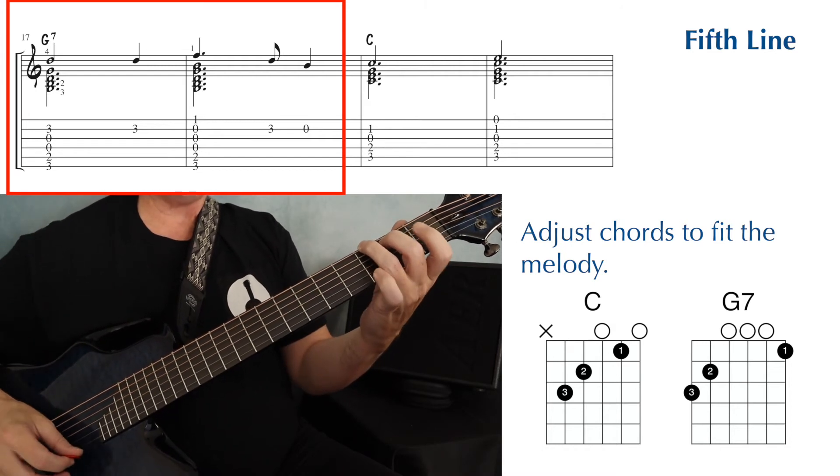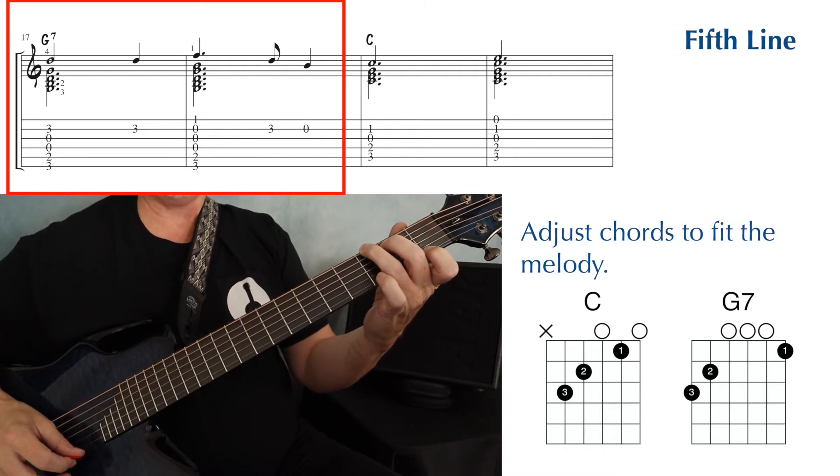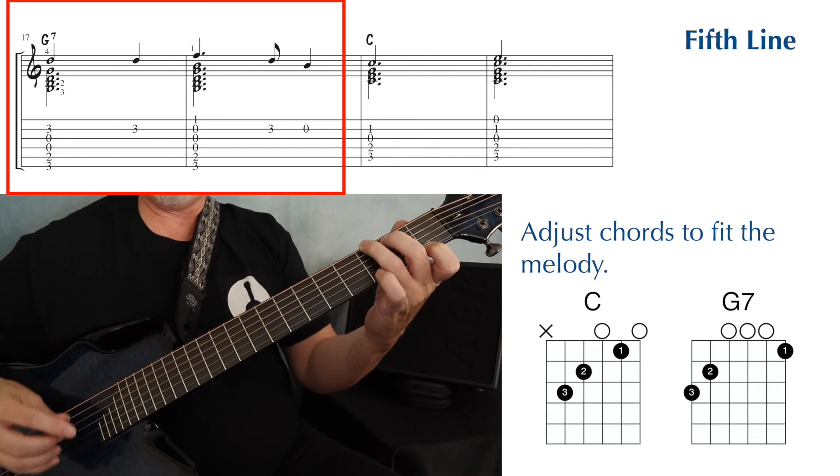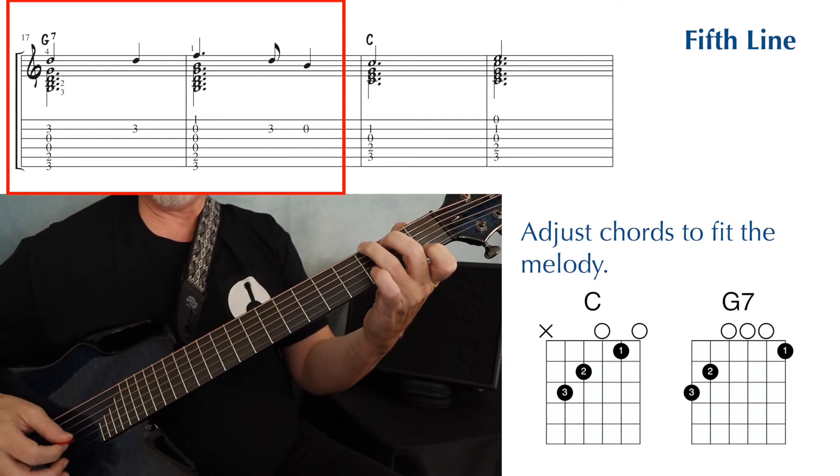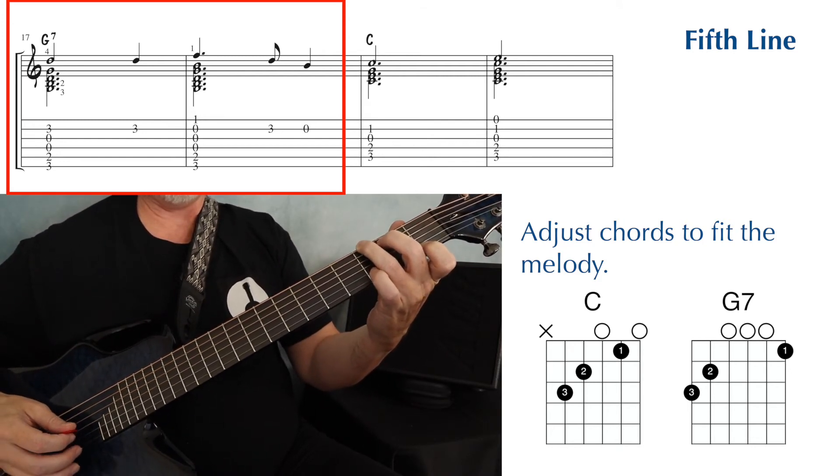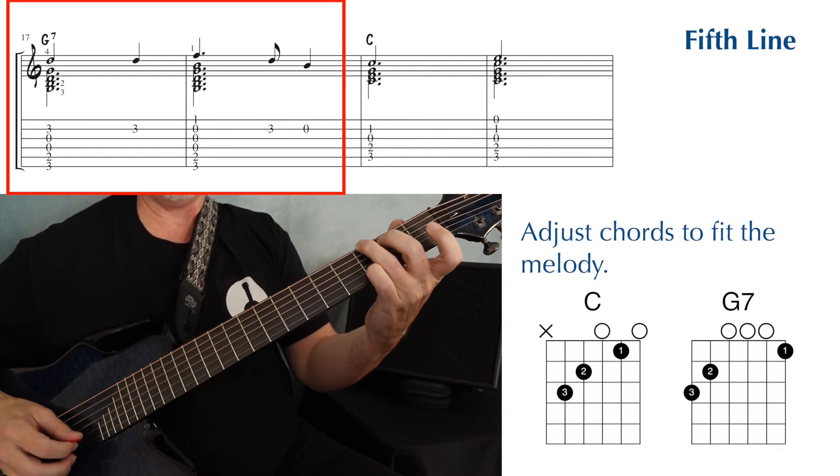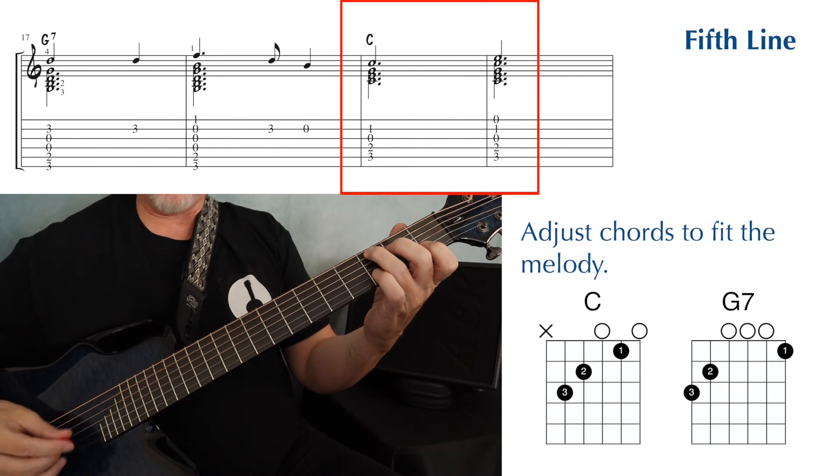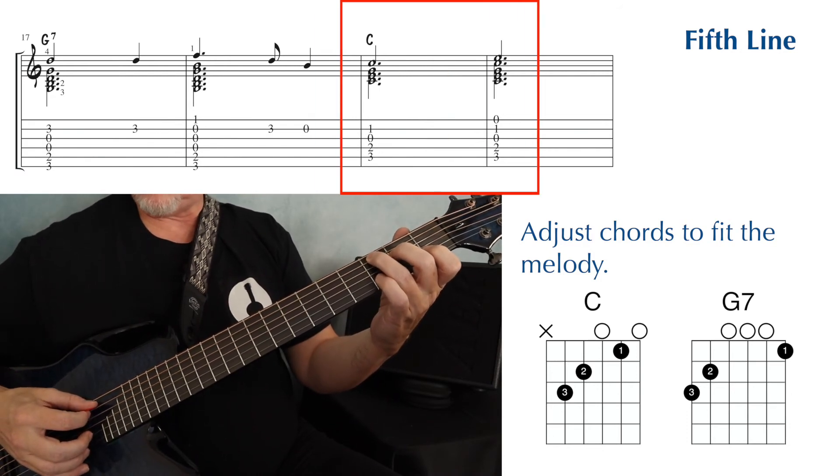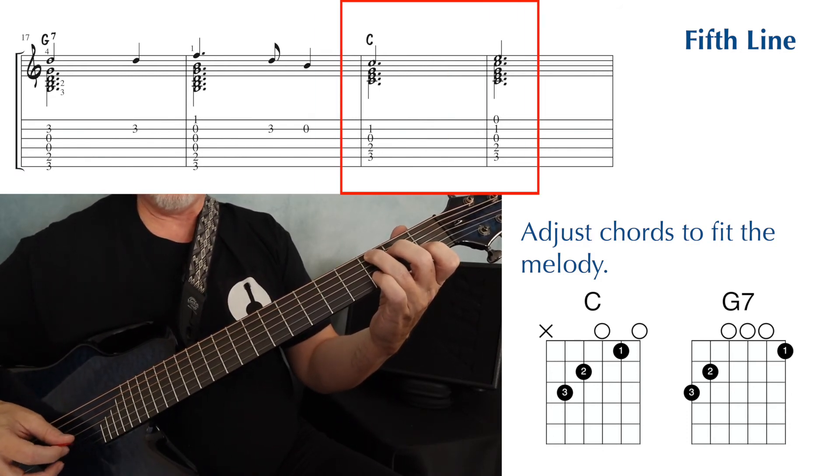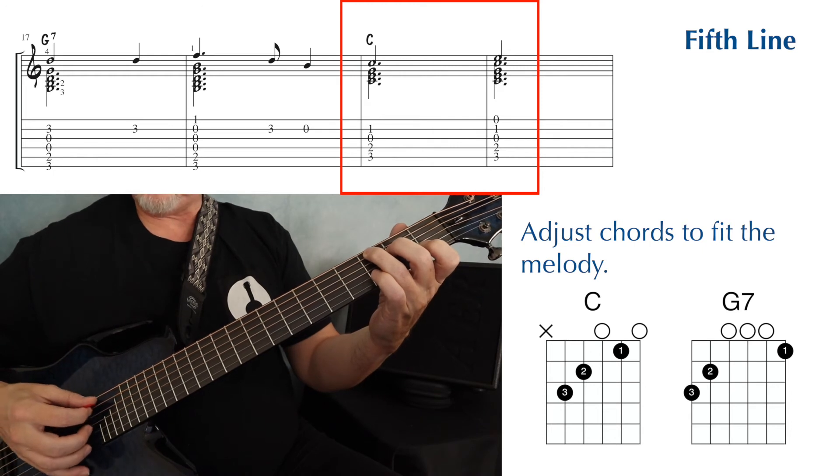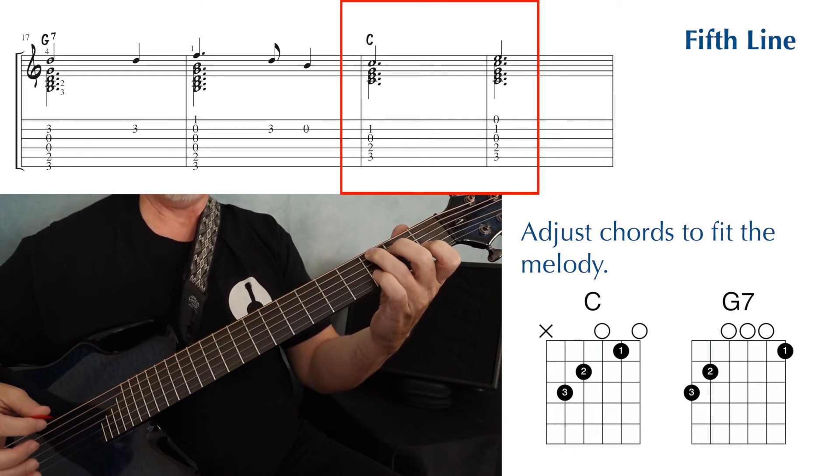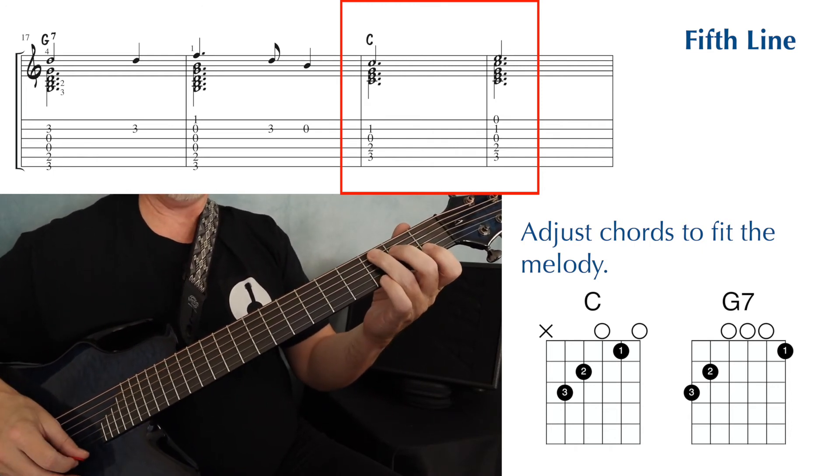Now the next measure is a G7 chord because we're putting our first finger down on the first fret, first string, turns it into a G7, and then four and zero on the second string. Then we move on to a C chord, playing through the second string only. Then we play the full C chord because our melody involves that full chord.